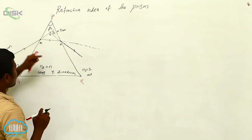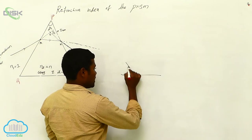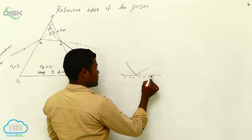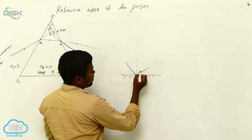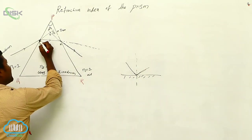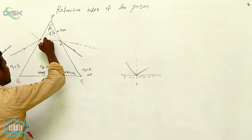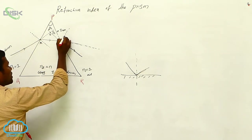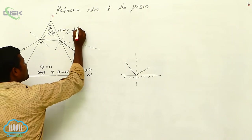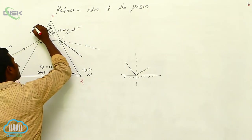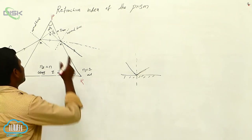Now we have to draw the normal lines. How to draw a normal line: wherever a ray is coming and changing direction at a point, you draw the perpendicular line at that surface at that point. So at point M, this ray is ending and this refracted ray is starting — you draw the perpendicular line there. Similarly at point N, you draw another perpendicular line. These perpendicular lines we are calling normal lines.